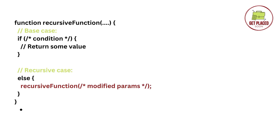Now look at the recursive function here. In the if statement we have a condition. If the condition is met we will return the result — that is the base case. If the base case is not met, we go into the else statement where we directly call the same function with modified parameters. Again inside the function it calls itself, checks the condition again — if not met it does the else, and if met it returns the result.